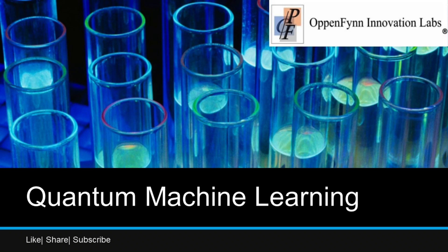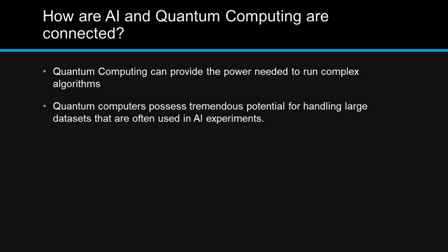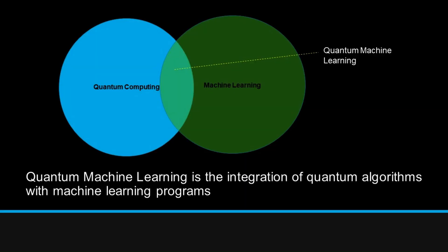The topic for the week is quantum machine learning. How are AI and quantum computing connected? Quantum computing can provide the power needed to run complex algorithms. Quantum computers possess tremendous potential for handling large data sets that are often used in AI experiments.